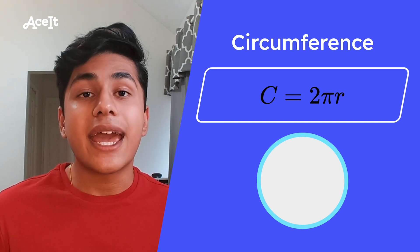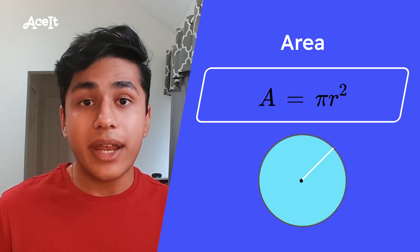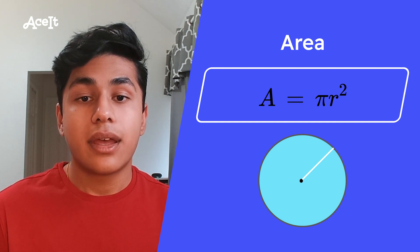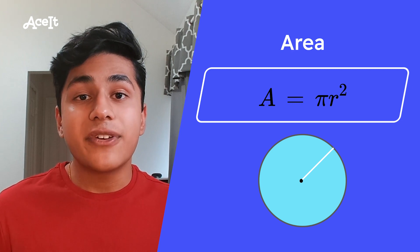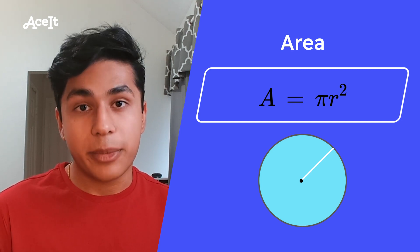Next up, we got the area of the circle. To calculate the area, you're going to take your radius, square it, and then multiply it by pi, or πr². It's nice to have the circumference equation and the area equation memorized, but if you can't memorize it, no big deal, because it will be on your SAT formula sheet.